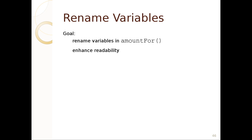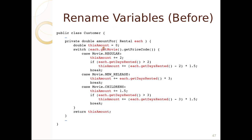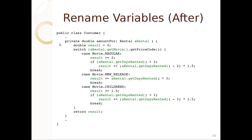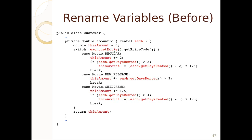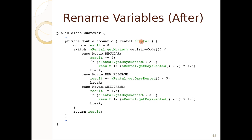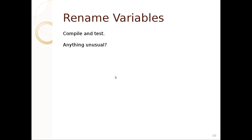Let's rename the variables inside `amountFor` since they're poorly named. `each` becomes `rental`, `this_amount` becomes `result` — that's the end result we want. Now it reads clearly: for a rental, get days rented, result plus two — pretty easy to follow. We compile and test, and it works.